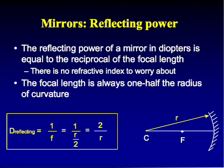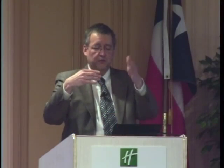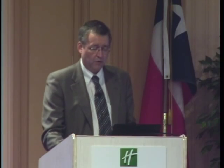For a concave mirror, the reflecting power is 2 over the radius of curvature. The focal length is half the radius of curvature, so power = 2/r. This mirrors the lens formula D = (n' − n)/r, but since a mirror has no refractive index change, n' − n = 1 − (−1) = 2, giving power = 2/r. The central ray for a curved mirror passes from the tip of the object through the center of curvature.